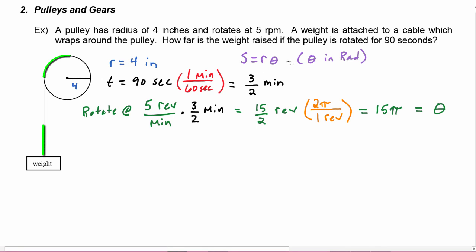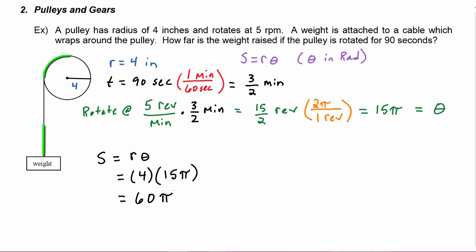Now in this equation we know r and we know theta in radians, so we can plug in. The arc length is going to be r times theta, which is going to be four times 15 pi, which equals 60 times pi. The units: 15 pi has no units and four is in inches, so this would be 60 pi inches.